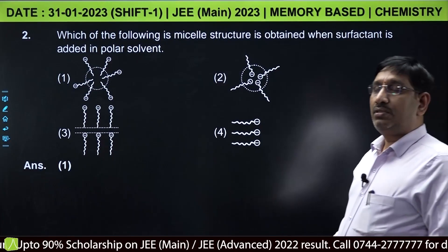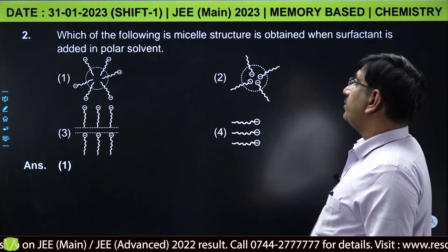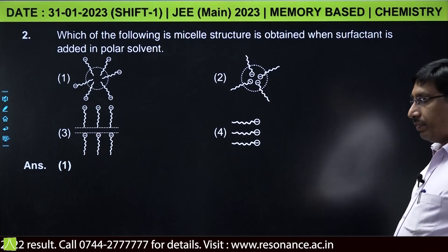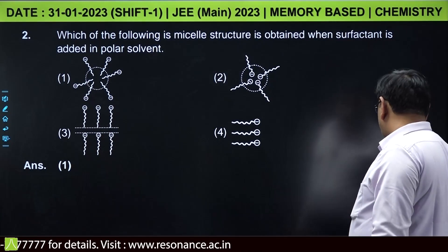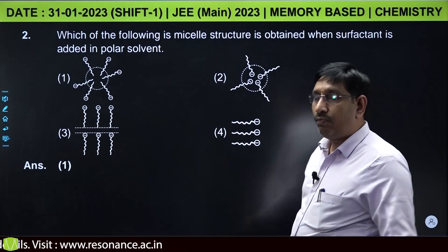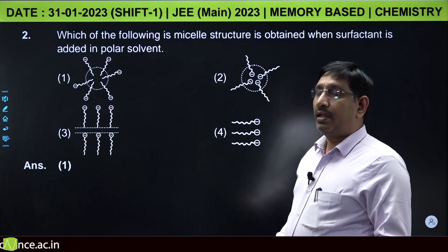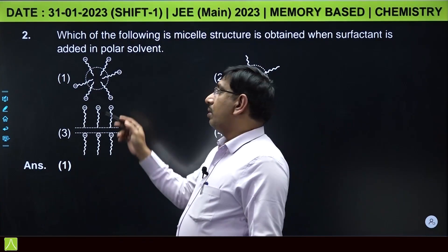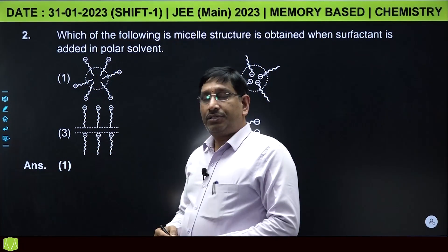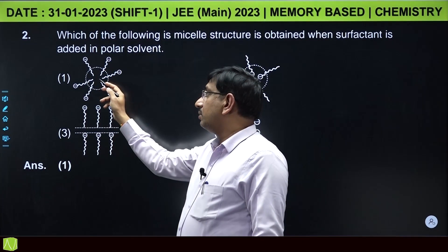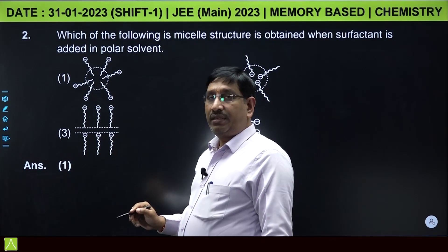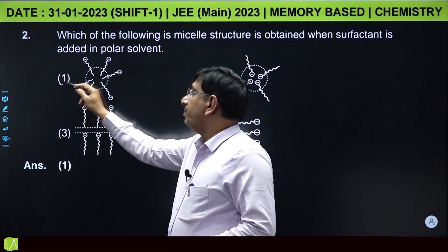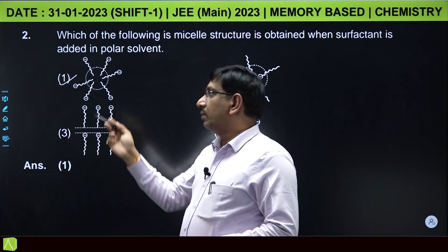This is a question from surface chemistry. Which of the following micelle structure is obtained when surfactant is added in polar solvent? When surfactant is considered, it has hydrophobic end and hydrophilic end. When the micelle is formed, the colloidal sized micelle is formed by the aggregation of the hydrophobic ends towards the center and hydrophilic ends outside the center. So the micelle formed can be this one.